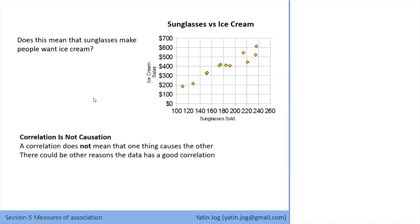What is important to understand in analysis is that correlation and causation are different. Correlation is just trying to find some relationship between two sets of numbers — it doesn't mean there is causation. Correlation does not mean that one thing causes the other. In statistical analysis we can find the correlation coefficient and tell what kind of relationship exists between two variables, but we cannot justify the causation.